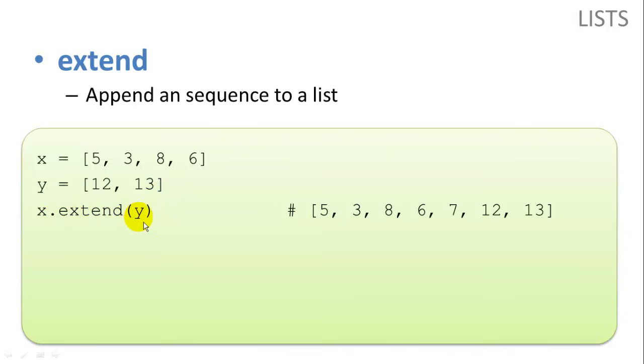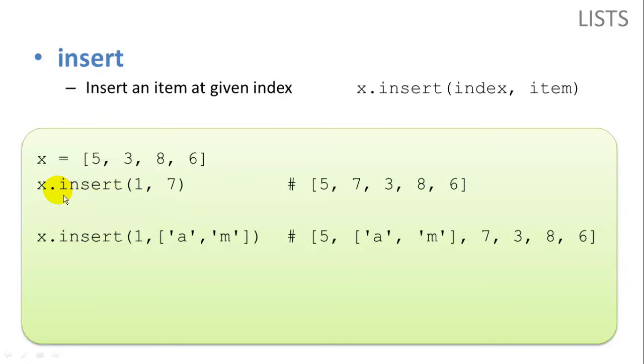x.extend y is going to combine both x and y together into list x. Insert allows us to insert an item into a certain index position. So here we want to insert a 7 into position 1. It will scoot the rest of the items to the right and put the 7 into the list. And here we're going to insert a sub list or an embedded list with letters A and M into position 1. Which is going to scoot all the rest of the items to the right and pop our sub list right in here.